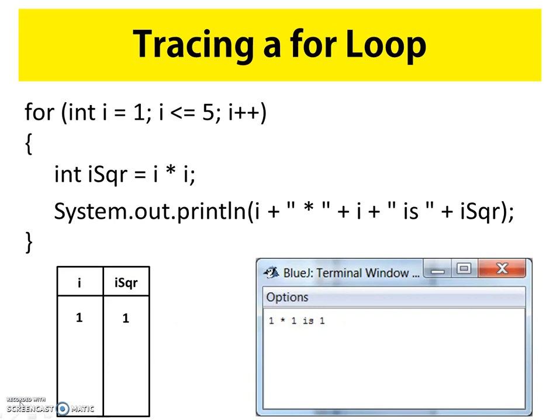Now we're going to use a common technique called tracing a loop — in this instance, tracing our for loop. This for loop has a counter variable 'i' declared and initialized to one, a condition statement where i is less than or equal to five, and a counter modification that increases i by one after each iteration. Inside the code block, we have a second variable 'iSquare' equal to i times i, and a print statement that says 'the value of i times the value of i is iSquare.'